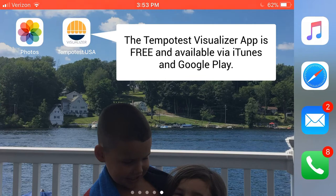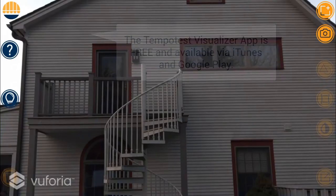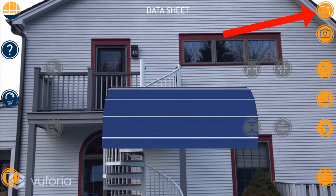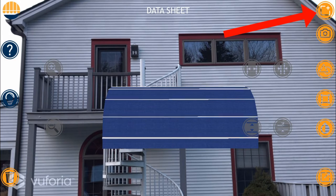I'm going to go ahead and open up the app, and as you can see, the app functions somewhat like a camera. Starting at the top right, I'm going to select the Add Awning icon, which will insert an awning onto the screen.